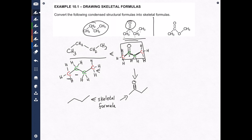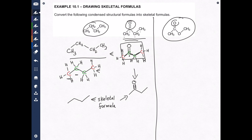Now we're going to take a look at this one. This is an ester, so it has a non-carbon, non-hydrogen atom here and one there. Not a big deal — just remember, you have to show it. So let me draw the answer and then we'll break it down. There's my double bond to oxygen — my carbonyl — and there's my bond to the other oxygen, and there's my bond to carbon. That is the skeletal formula.